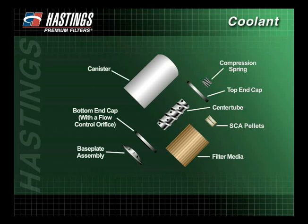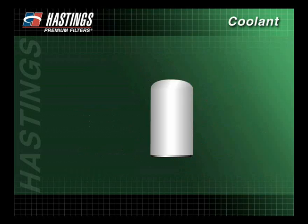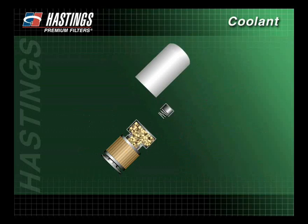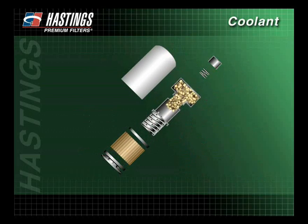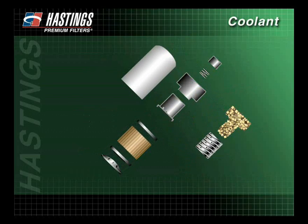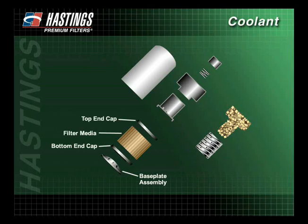Spin-on coolant filters without chemicals contain no SCA pellets. The primary components of a controlled release spin-on coolant filter are a base plate assembly, a bottom end cap, the filter media, a top end cap, and a center tube.